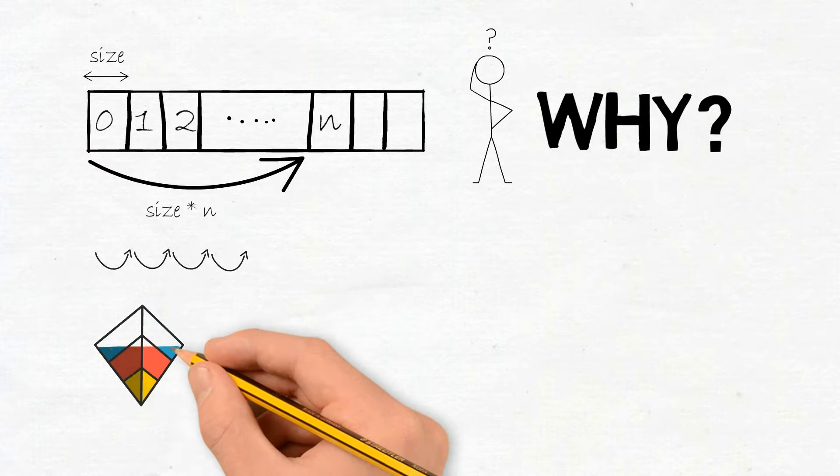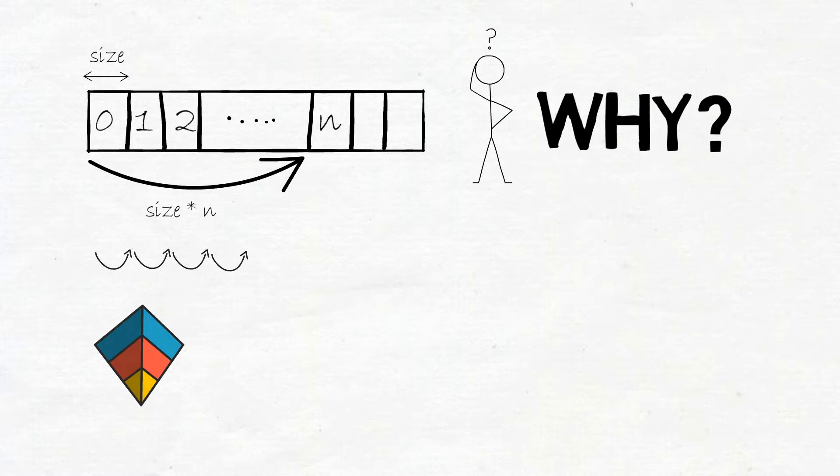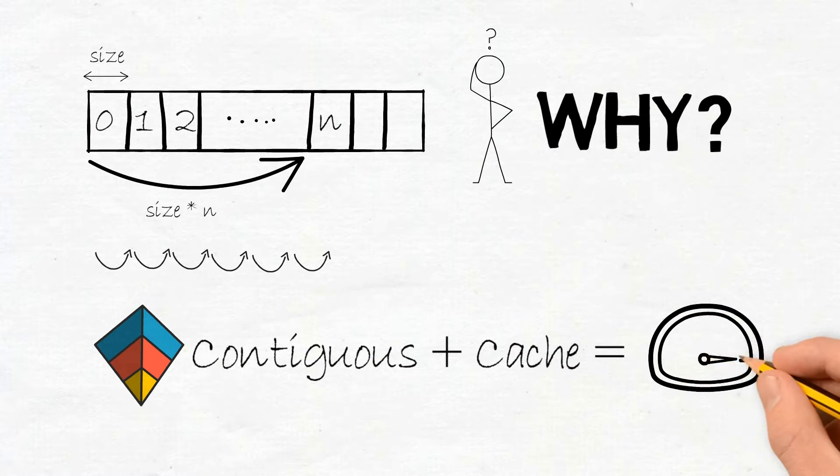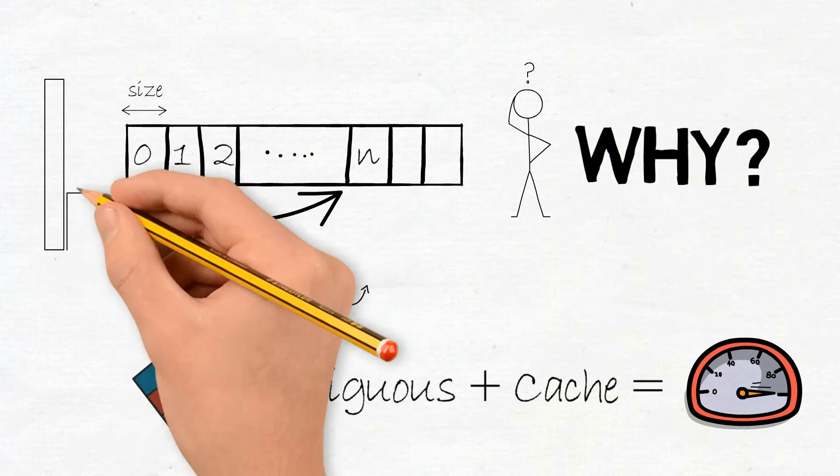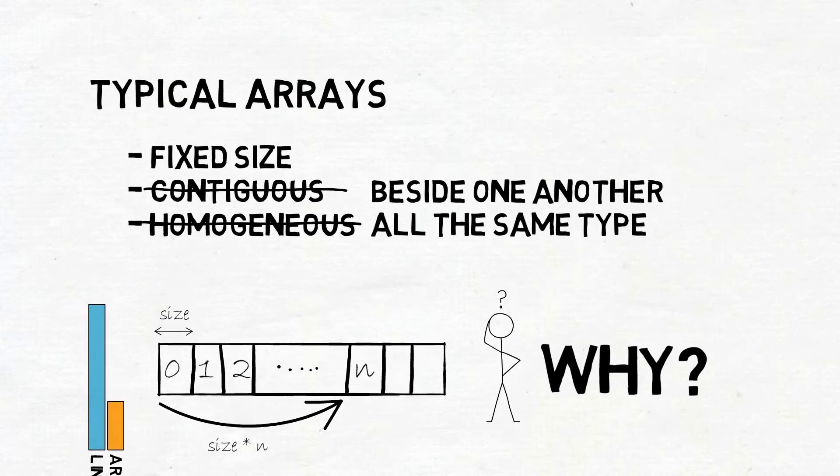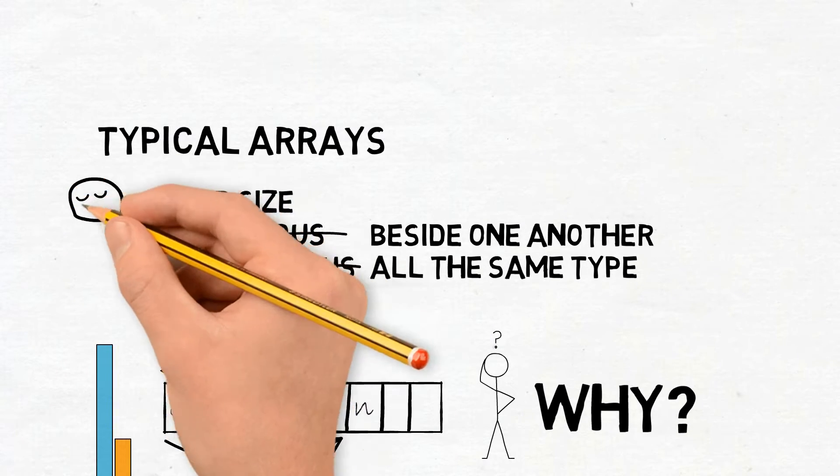They're really good at sequential access because hardware has this thing called caching, which means that when we're accessing one memory address, the system will typically have cached memory addresses that are nearby. So because these things are contiguous, when we're reading through them one after the other, we get really good performance. And they typically have a low memory overhead because we don't have any wrapper objects or frames around each of the elements within the array, so we can store a lot of them very efficiently. There's only the overhead of the array as a single entity, and then all of the data is beside each other.